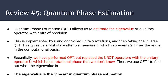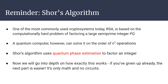Shor's algorithm uses quantum phase estimation to factor an integer. RSA is based on the assumption that factoring a large semi-prime integer — the product of two primes p and q — is computationally hard, even for a supercomputer. Our quantum computer can solve it in polynomial time (specifically O(n³)), which is fast enough to realistically break RSA if we had a functioning quantum computer capable of handling large enough numbers.